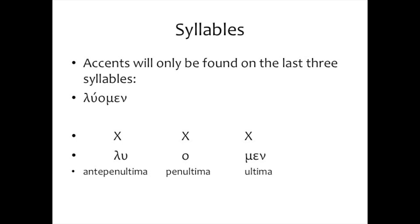Let's take a typical word you'll probably see very frequently in the early part of your studies: the verb luomen. We're going to break that down into three syllables: lu-o-men. The x's above the word show the last three syllables, and we give each syllable a term. The last syllable of a word is called the ultima, which means in Latin 'the last syllable.'